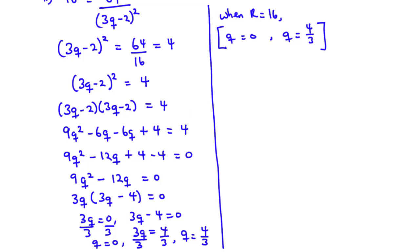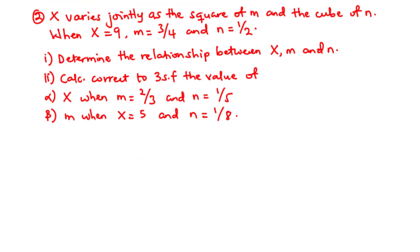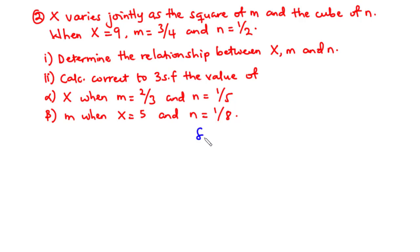Now let's solve the second question. That is NOVDEC 2013 question 15a. x varies jointly as the square of M and the cube of N. When x equals 9, M equals 3 over 4 and N equals 1 over 2. Part i: determine the relationship between x, M and N. Part ii: calculate correct to 3 significant figures: alpha, x when M is 2 over 3 and N is 1 over 5; beta, M when x equals 5 and N equals 1 over 8.